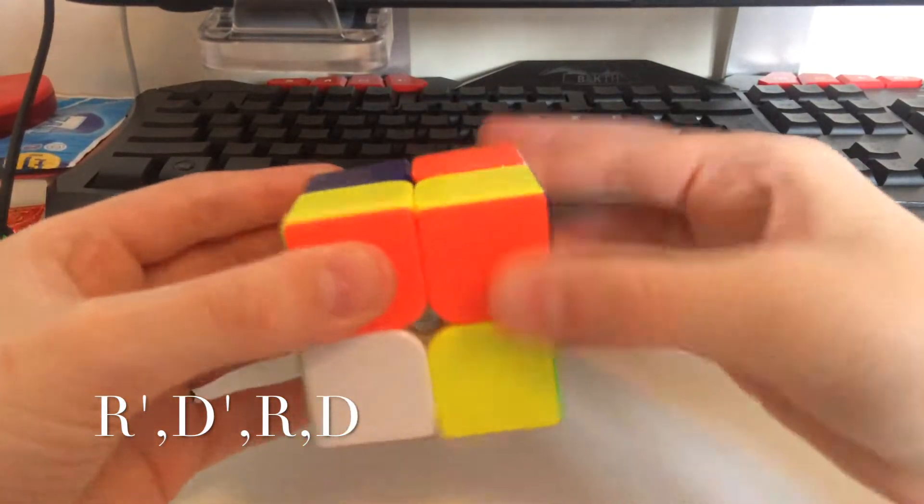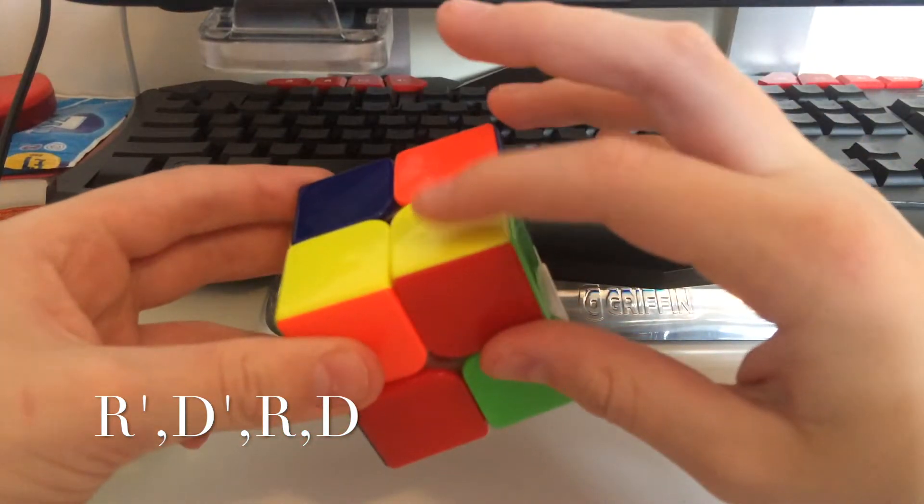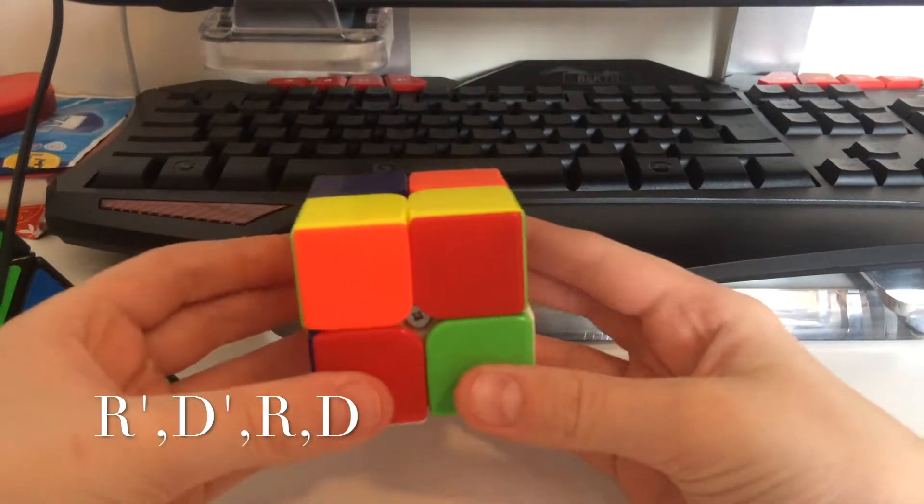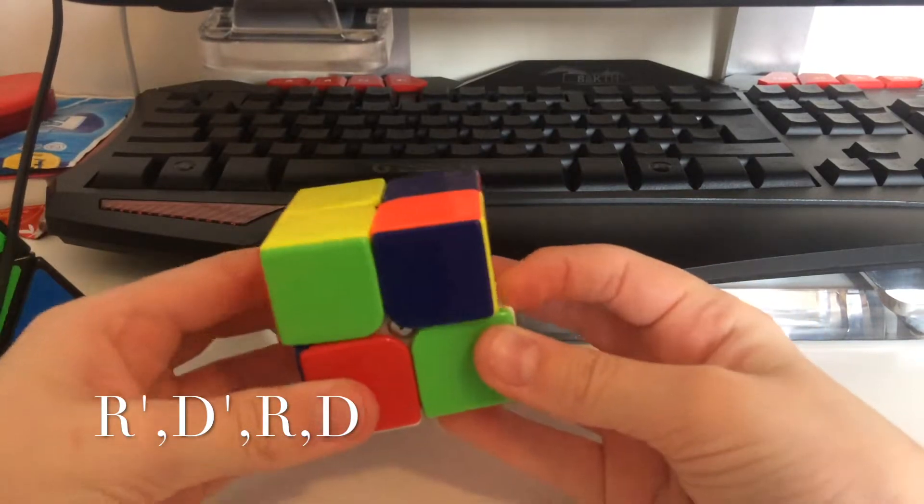Down, across, up, across. And now it's orientated correctly. We're trying to get the whole yellow face. Now you need to move the top layer across.